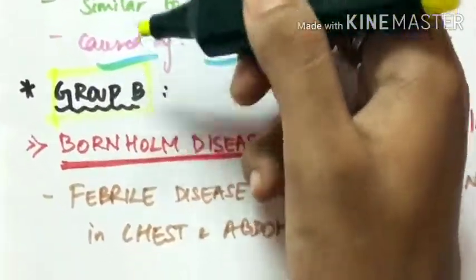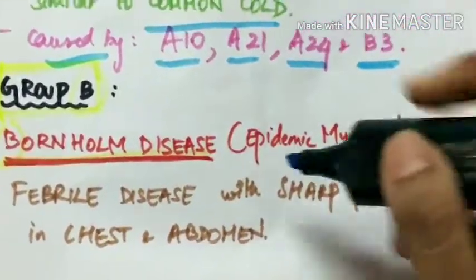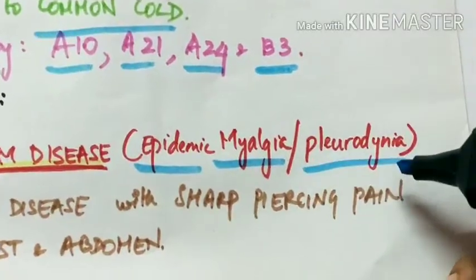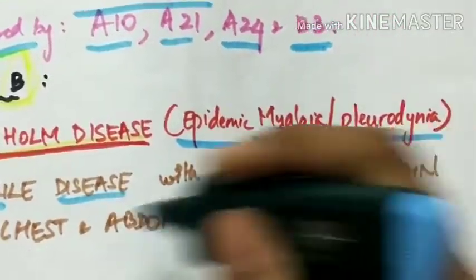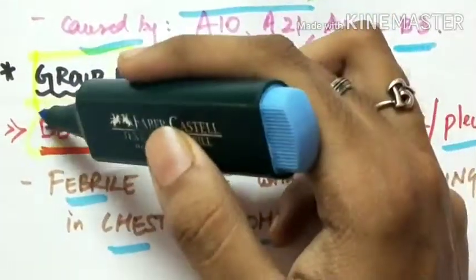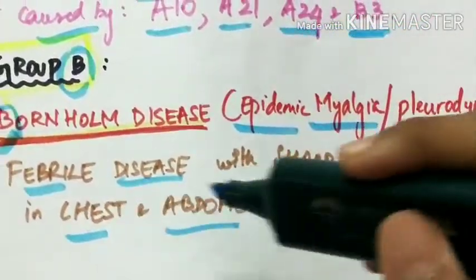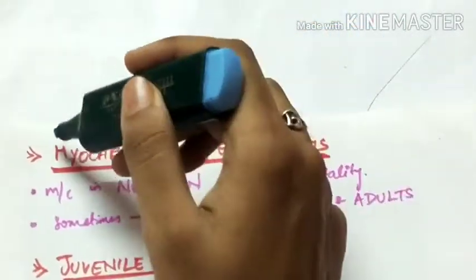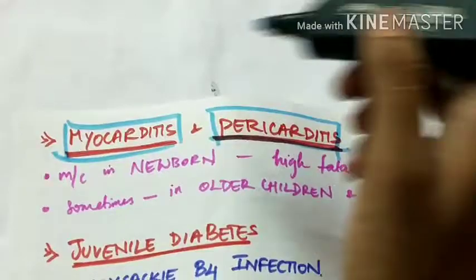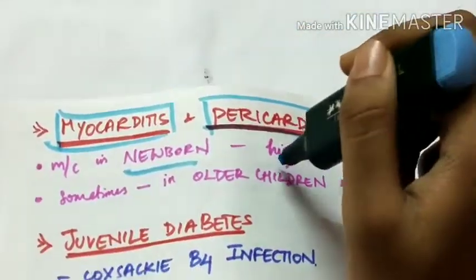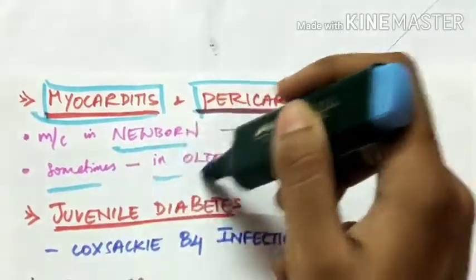Group B viruses cause Bornholm disease, also called epidemic myalgia or pleurodynia — a febrile disease with sharp piercing pain in the chest and abdomen. Other diseases caused by group B viruses include myocarditis and pericarditis, inflammation of the myocardium and pericardium of the heart, which is most common in newborns and has a high fatality rate, though it can also affect older children and adults.